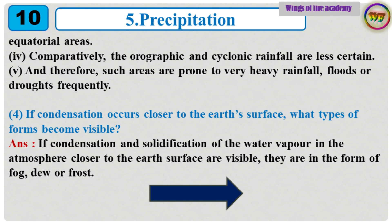If condensation occurs closer to the earth's surface, what types of forms become visible? If condensation and solidification of the water vapor in the atmosphere closer to the earth's surface are visible, they are in the form of fog, dew or frost.